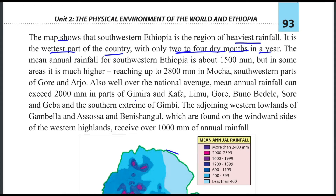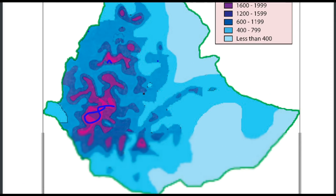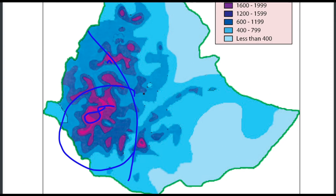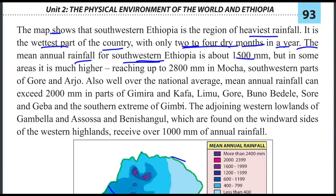The rainfall for southwestern Ethiopia is about 1500 mm. But in some areas it is much higher, reaching up to 2800 mm.